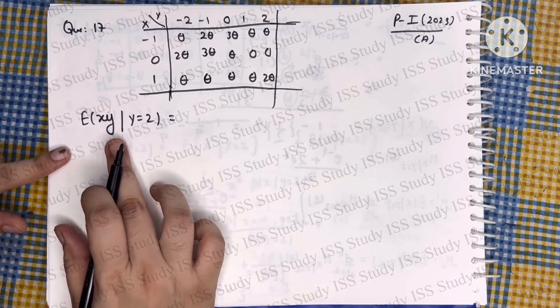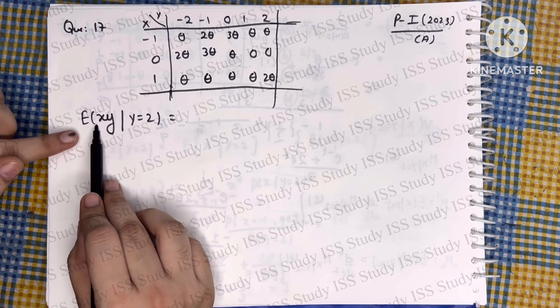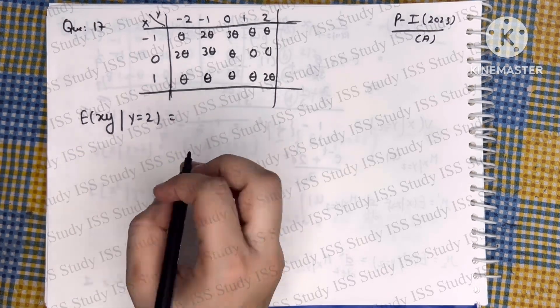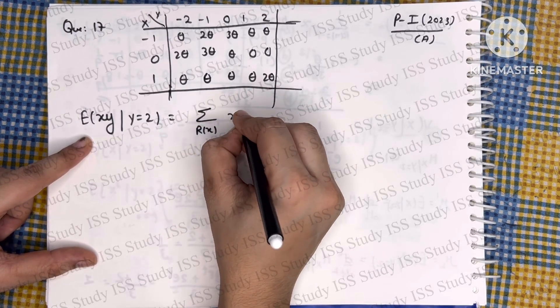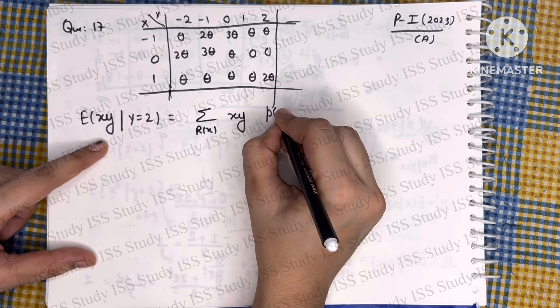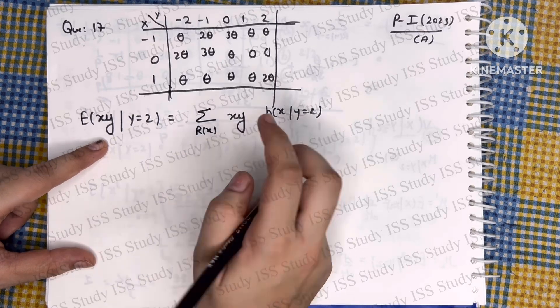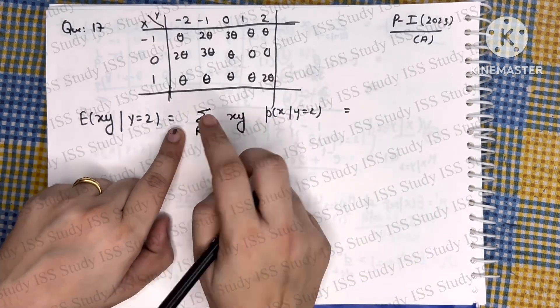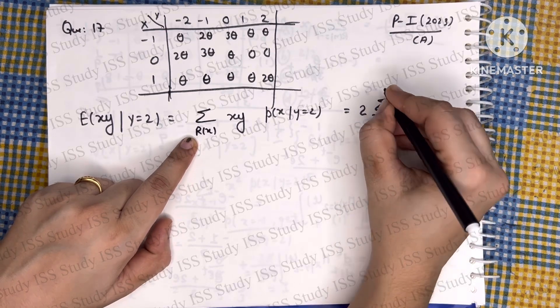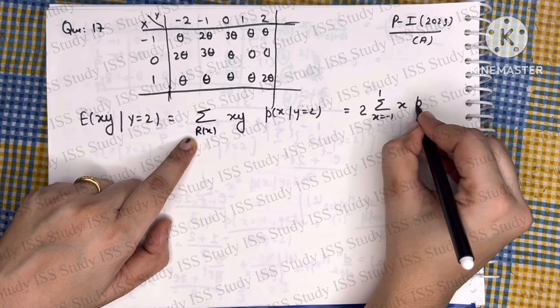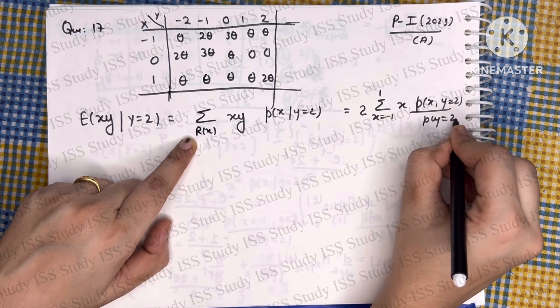Coming back to the question, it is already given that Y is taking value 2, and we have to find expectation of XY. When Y equals 2, I am going to use this formula: summation over range of X, XY times conditional PMF of X given Y equals 2. I am going to put Y equals 2 and take this 2 outside because it is acting as a constant value. So summation over range of X, where X is taking values from minus 1 to plus 1, we have X times probability of X, Y equals 2 divided by probability Y equals 2.